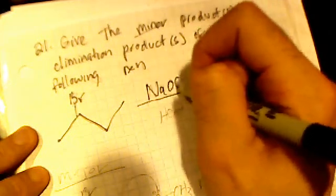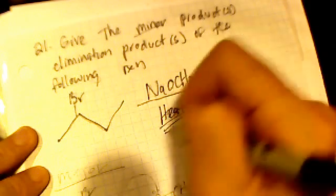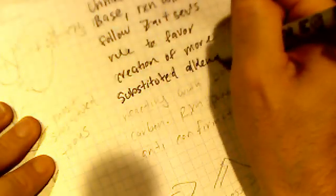We're treating it with sodium methoxide and with heat. With heat we know that the elimination is going to be E2. It's an unhindered, small base — sodium methoxide — so the reaction will follow Zaitsev's rule to favor creation of the more substituted alkene.